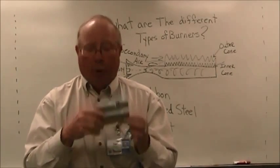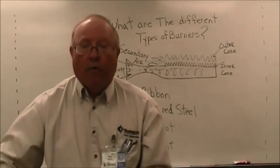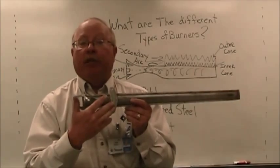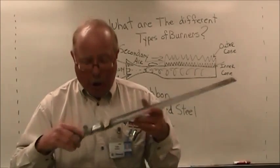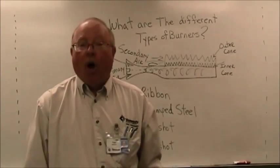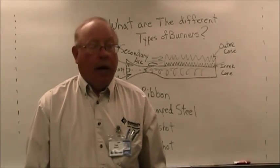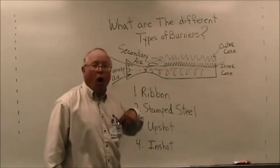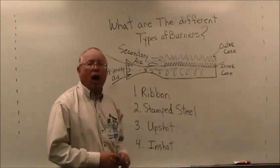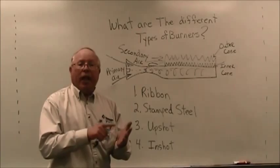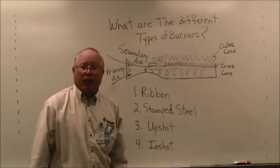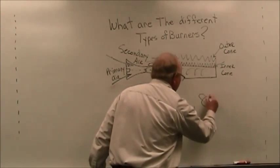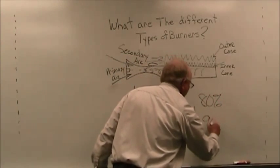All of these burners have a crossover on them that allows for the burner flame to be spread to the adjacent burner. And they all allow for the combustion triangle. Each of these burners can be used—all four of these burners can be used on 80% and 90% efficient furnaces.